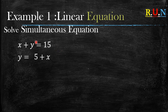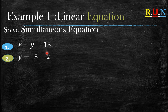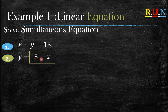Example number one: what do you do when you're told to solve two equations simultaneously? First of all, this is actually very easy. Let's quickly label them as equation number one and equation number two. The reason I say this is very easy is because when you look at equation number two, it's already telling you that y is equal to five plus x, so you can use this five plus x and substitute it as the y value in our first equation.